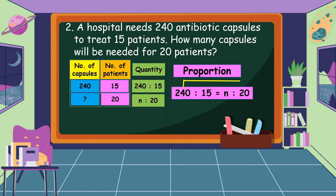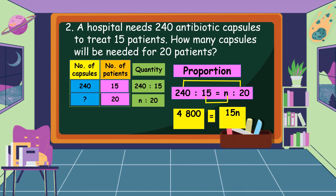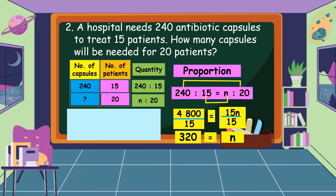We multiply 240 and 20, which gives 4800, and 15 times n equals 15n. To get the value of n, we divide both sides of the equation by 15: 15n divided by 15 equals n, and 4800 divided by 15 equals 320. Therefore, there are 320 capsules needed for 20 patients.